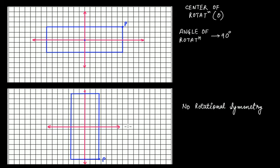Now if we again rotate this clockwise by another 90 degrees from this position — initially we moved by 90 degrees and now again we are moving by 90 degrees — so what is the total angle? You will say 90 previously and 90 now, so the total angle of rotation is now 180 degrees.